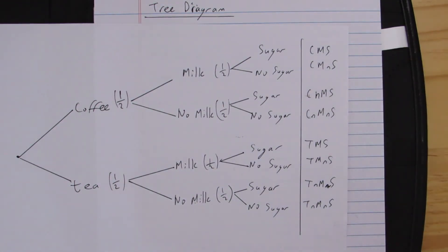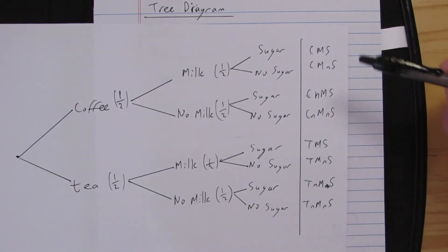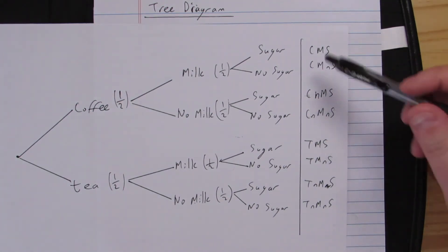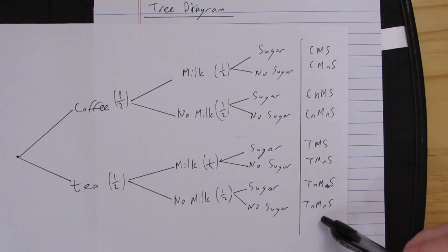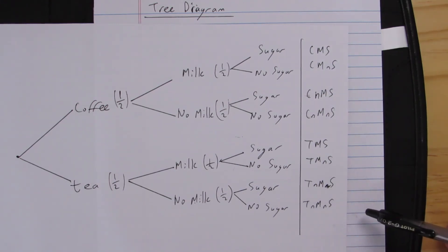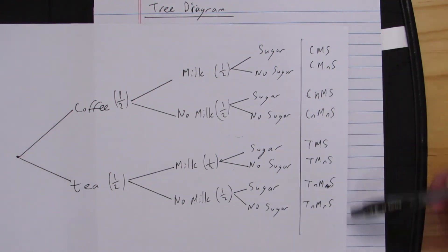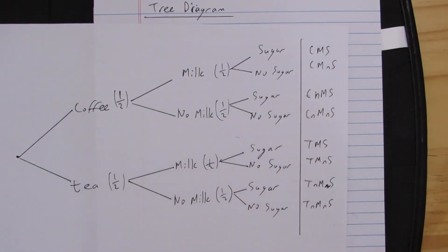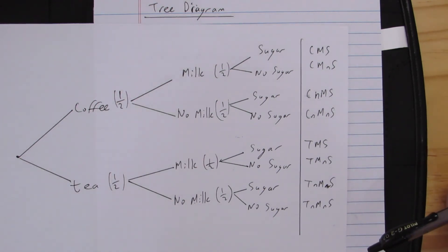What we see here is that we have eight outcomes in total, and all of them are equally likely. We've got coffee, milk, sugar; coffee, milk, no sugar — all the way down to tea, no milk, no sugar. If I was to choose any of these outcomes, I would have a one in eight chance. We can then work our way back on the diagram to work out various probabilities.